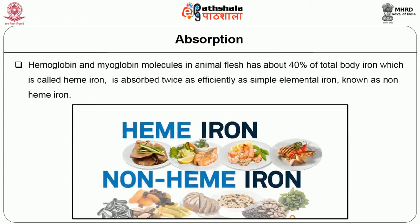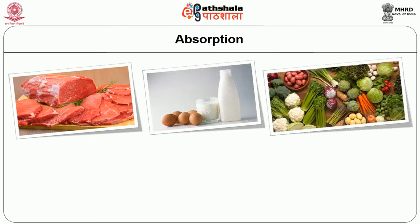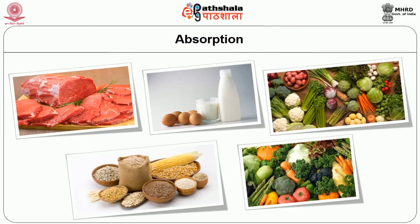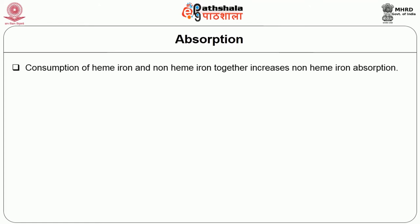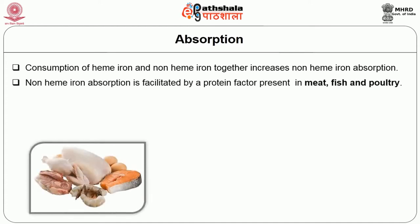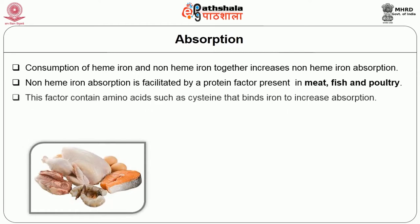Hemoglobin and myoglobin molecules present in animals contain about 40 percent of total body iron, called heme iron, and this is absorbed twice as efficiently as non-heme iron. Animal flesh, egg, and milk, as well as some vegetables, grains, and other plant foods also contain non-heme iron. The difference in absorption of heme and non-heme iron makes animal flesh a rich dietary iron source. Non-heme iron absorption is facilitated by a protein factor in meat, fish and poultry containing amino acids such as cysteine, which binds iron to increase absorption.